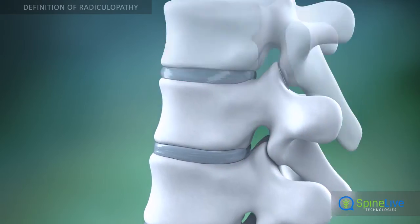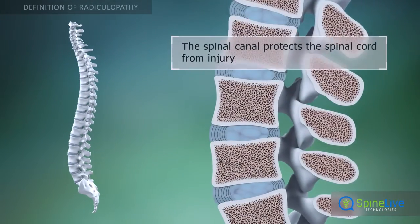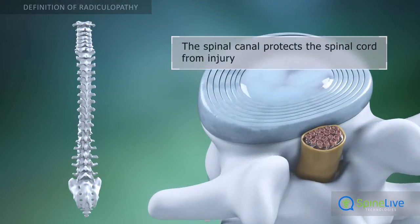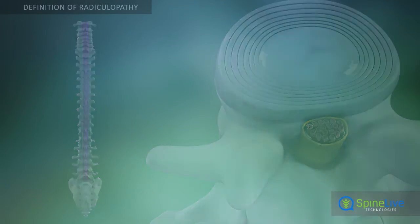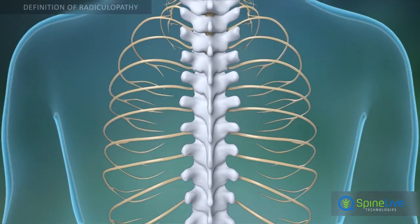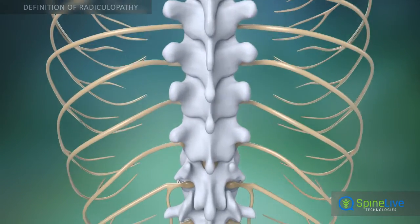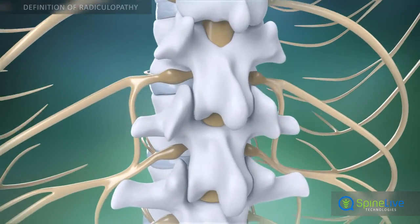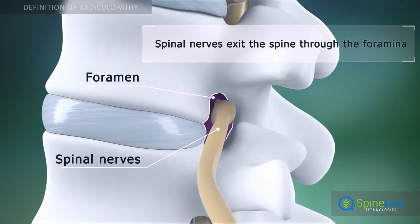This tunnel is known as the spinal canal. The spinal canal protects the spinal cord from injury. The spinal nerves branch off the spinal cord and travel through small openings between the vertebrae called intervertebral foramen.